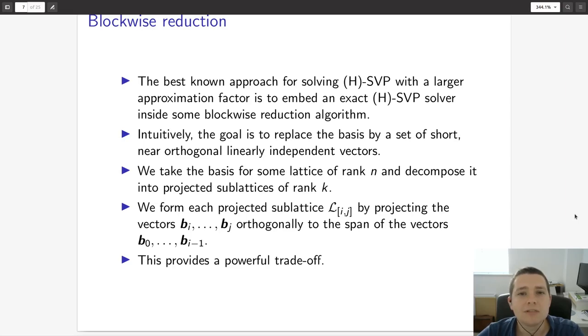This provides a very powerful time-quality trade-off. If the rank of our projected sublattices is close to the rank of the lattice at large, then the output basis is more likely to be short and near orthogonal. By contrast, if we make k rather small, then the problem will be faster to solve because it's less challenging, but the quality of the output basis is unlikely to be as good as we would want. There's a real trade-off between how large we choose these blocks to ensure our output basis looks a certain way, but we also need to balance this against the running time.